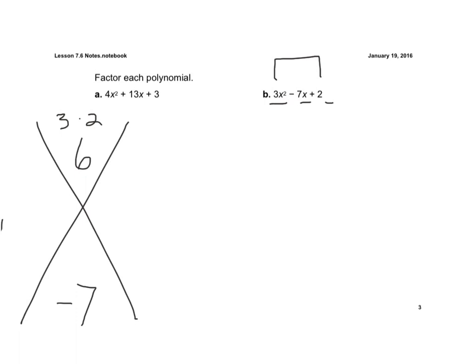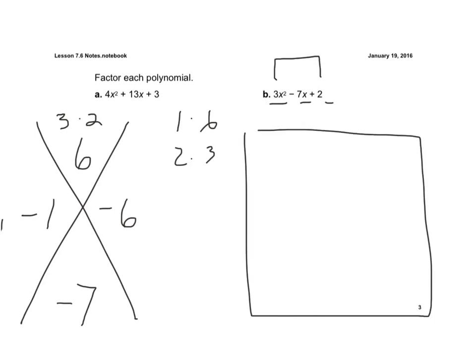Well, the factors of 6 are 1 and 6 and 2 and 3. And the only ones that work would be negative 1 and negative 6. So now I use my Xbox method. Again, the 3x squared goes in that box. Positive 2 goes here. And then negative 1x and negative 6x.